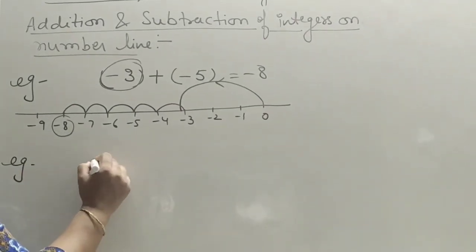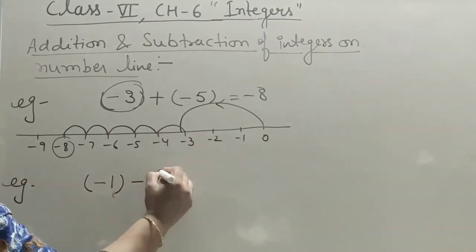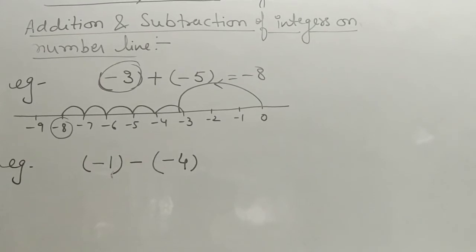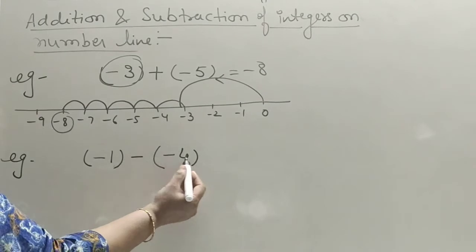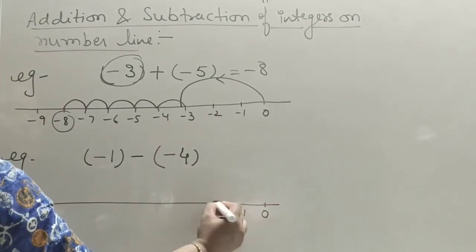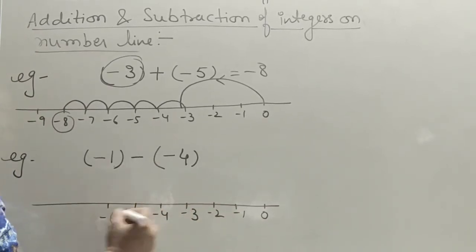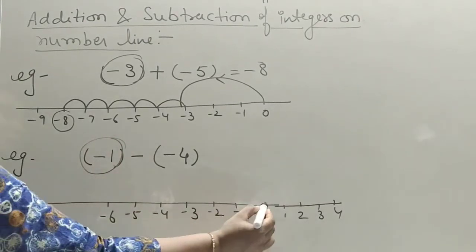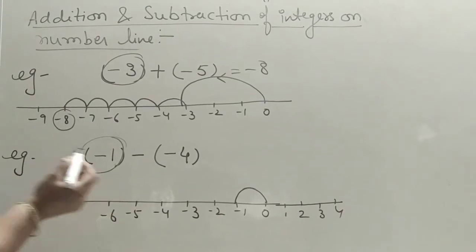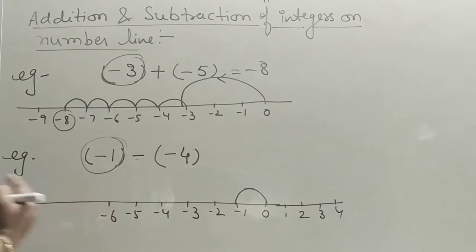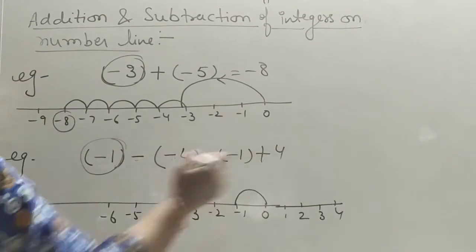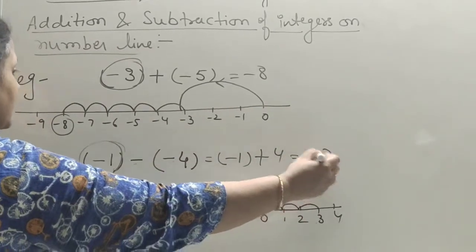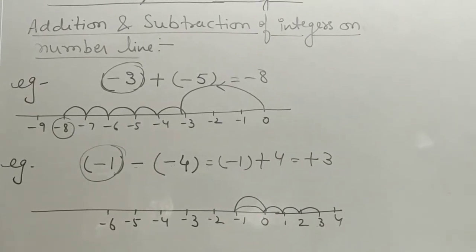Another example: minus 1 minus 4. This is subtraction of integers. We start at zero, jump to minus 1. Now there are two minus signs together, so they convert to a plus sign — minus 1 plus 4. Since it becomes plus 4, we jump 4 steps to the right side. The answer is plus 3. By this way you can add or subtract integers on the number line.